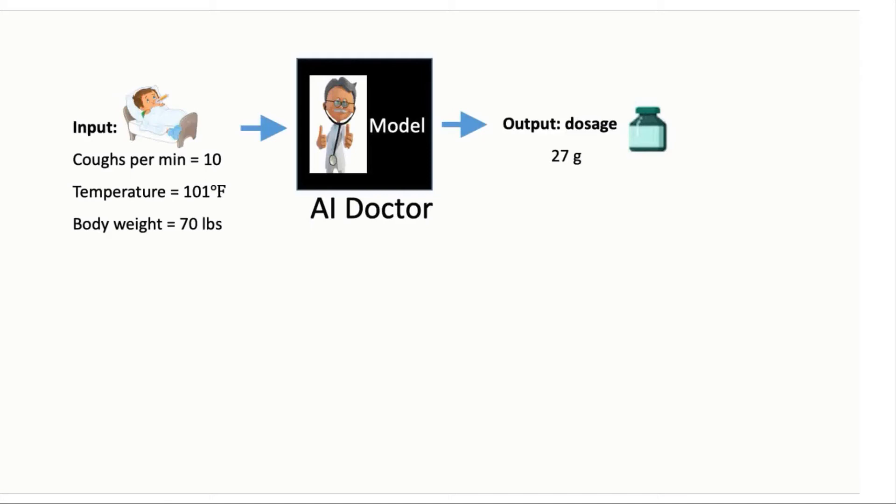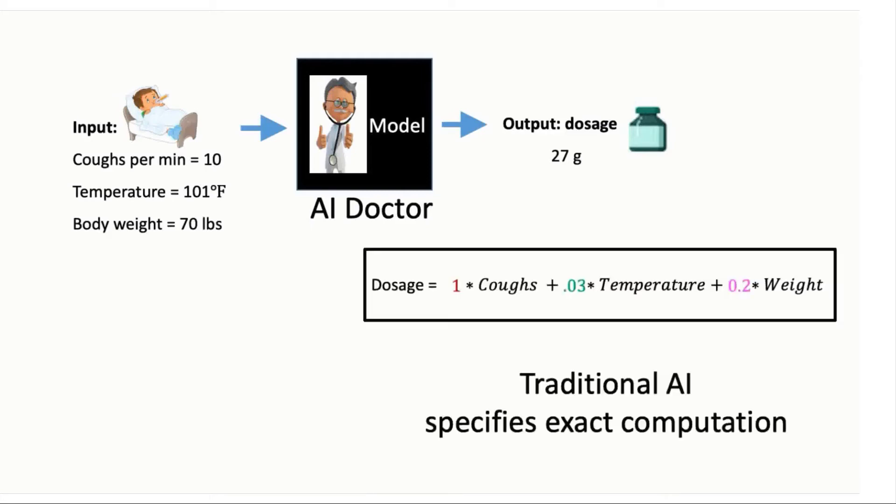In traditional AI, the computational algorithm would be fully specified beforehand. For example, we would pre-specify that the dosage would be 1 times the number of coughs per minute, 0.03 times the temperature, and 0.2 times the body weight, all summed together.